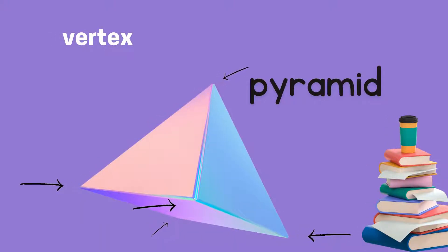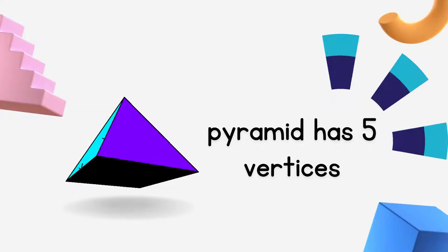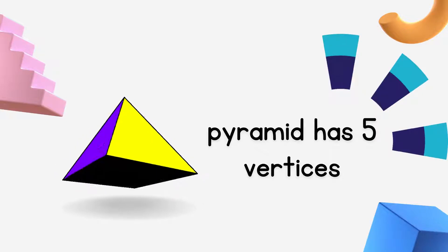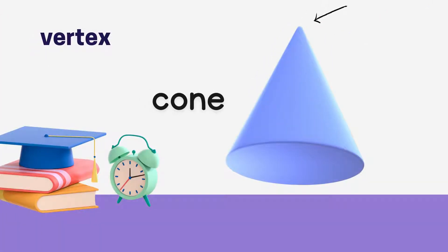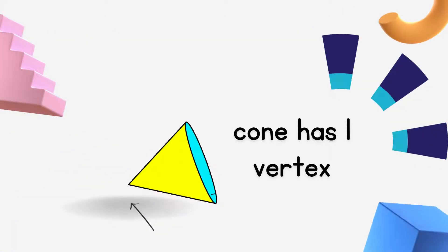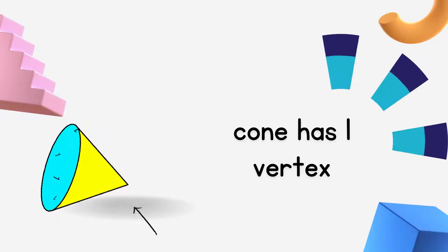We can also find Vertex on Pyramid. Pyramid has 5 Vertices. Pyramid has 5 Vertices. Next is Cone. Cone also has Vertex. There is 1 Vertex. There is 1 Vertex for Cone. Cone has 1 Vertex.